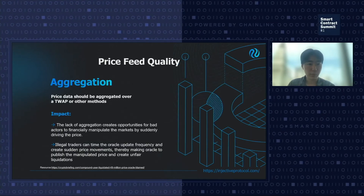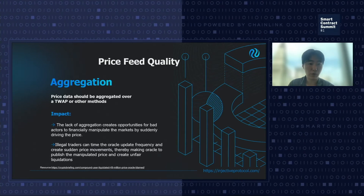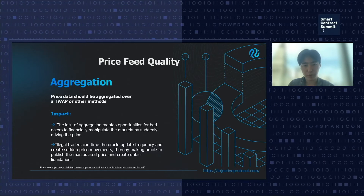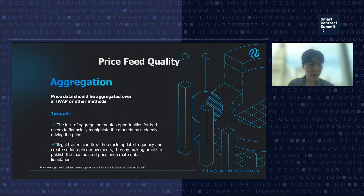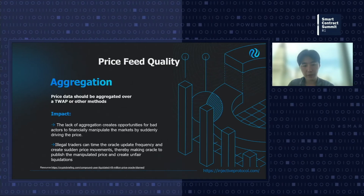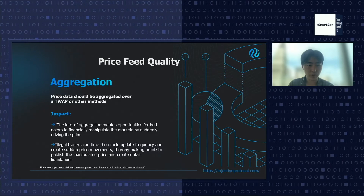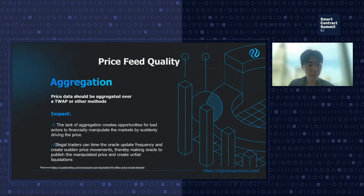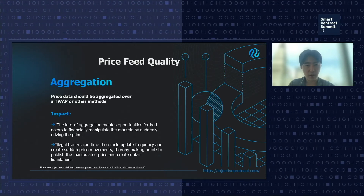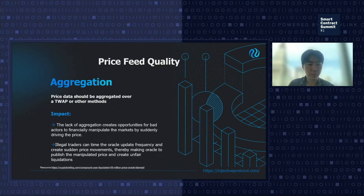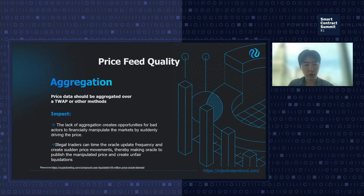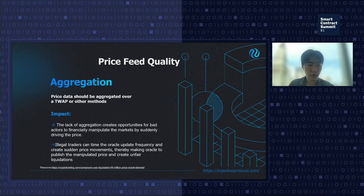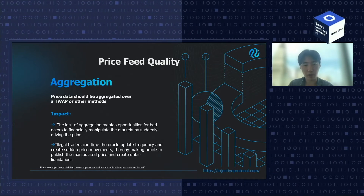Another very important aspect of price quality is aggregation. The price data should be aggregated over a TWAP with very fine-grained calculation across a wide range of timestamps. The lack of aggregation — for example, creating a fixed window that samples exactly at the three-minute mark every time — means legal traders can manipulate the price of the underlying by making a large market move at that split second at the time of sampling, creating unfair liquidations. This is actually a very minimum requirement for many oracle price feeds.